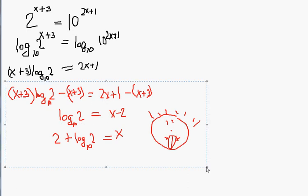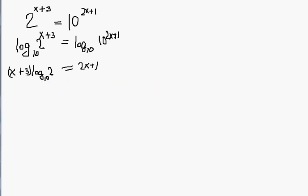Instead, here's what we should do. We should multiply out on the left-hand side to get x times the logarithm of 2 base 10 plus 3 times the logarithm of 2 base 10 equals 2x plus 1.